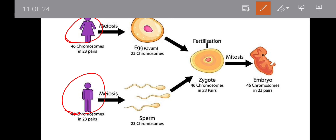Females and males both have 46 chromosomes in 23 pairs. Females produce the reproductive cell called the ovum, and males produce the reproductive cell called sperm. When ovum and sperm fuse, a zygote is formed.